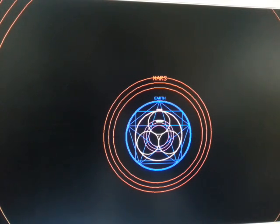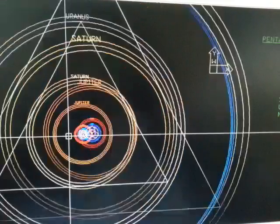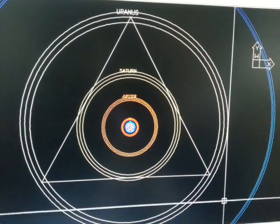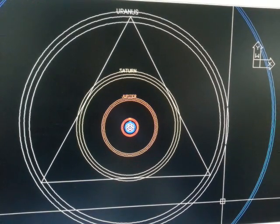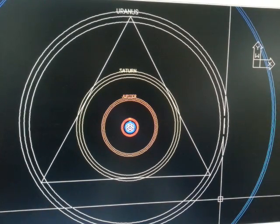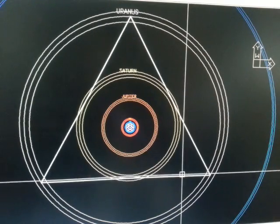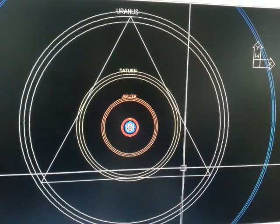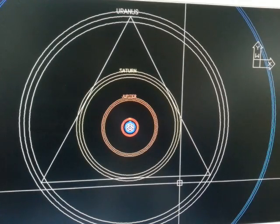Let's turn on some other stuff. So out here, if we take a triangle within Uranus's mean orbit, than Saturn's mean orbit inscribes within that triangle.